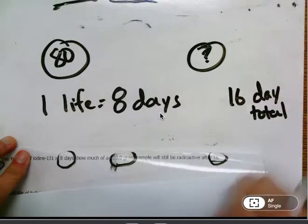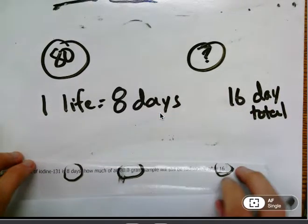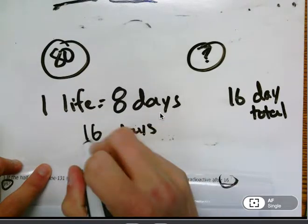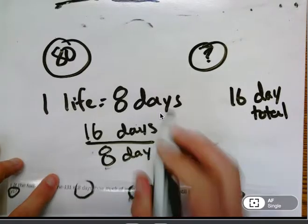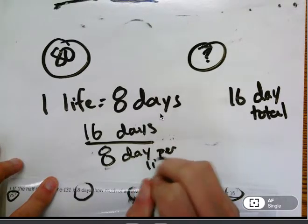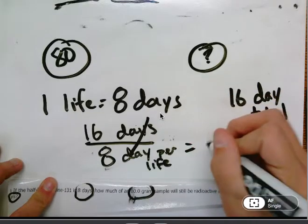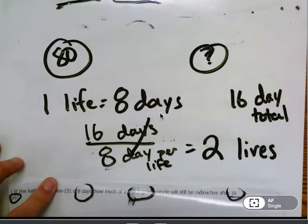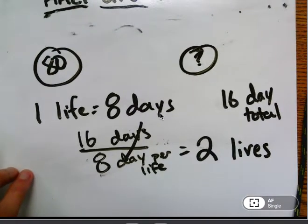I have 16 days total. I need to find out how many times can eight go into 16. So I take 16 days divided by eight days per life. Those days will cancel out, which means I end up with two lives. So now I have enough information to draw my diagram.